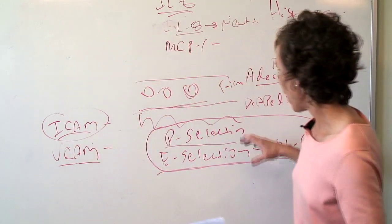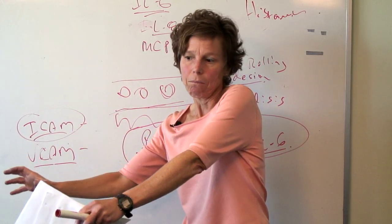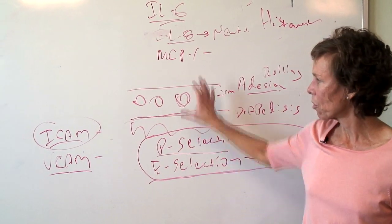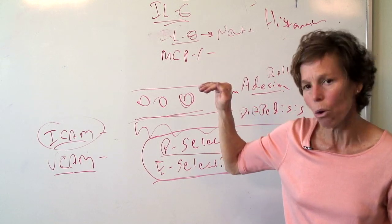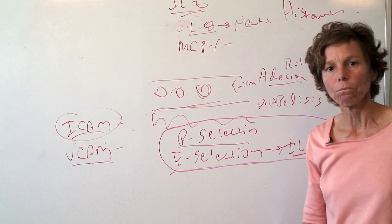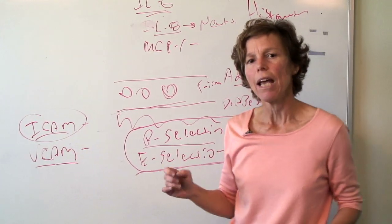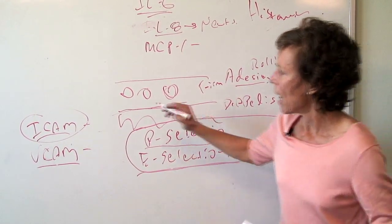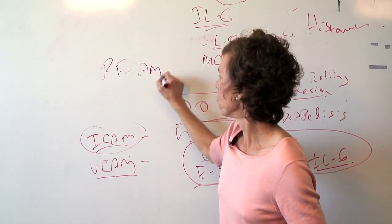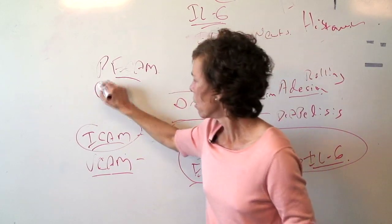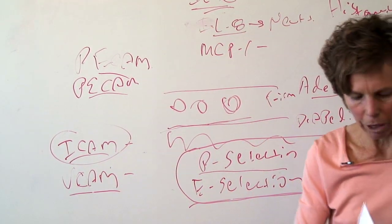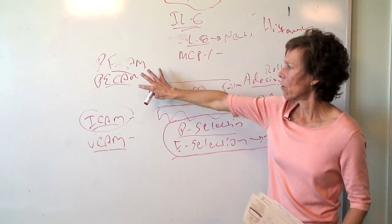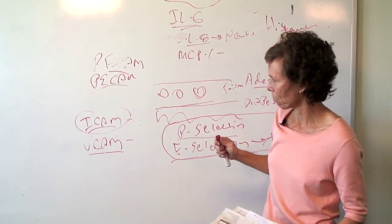Backing up: the first thing that happens is C5a, mast cell, histamine. Histamine takes P-selectin — prepped — and you start to roll. E-selectin also comes up, which starts to enable those cells to roll. Then you have firm adhesion with ICAM and VCAM depending on the cells reacting. Then you've got to diapedese and get into the tissue, and that is done by an interaction of PCAM on the endothelial with PCAM on the particular immune cell.